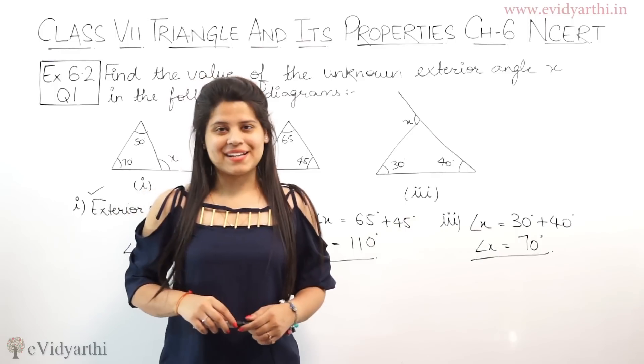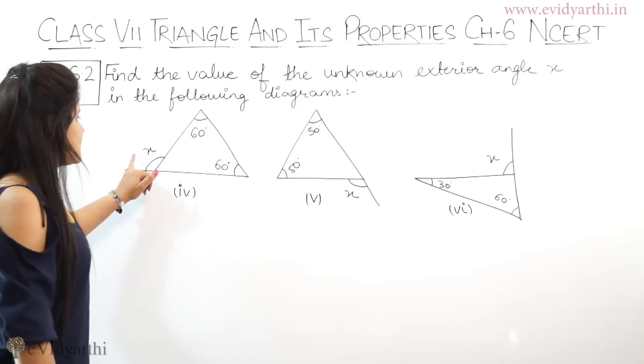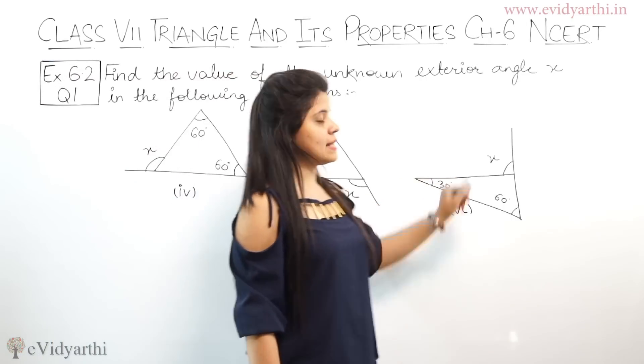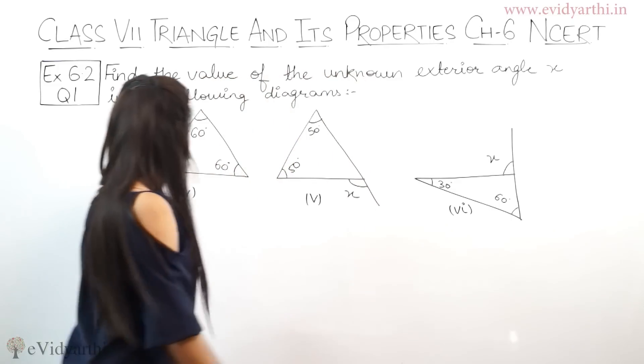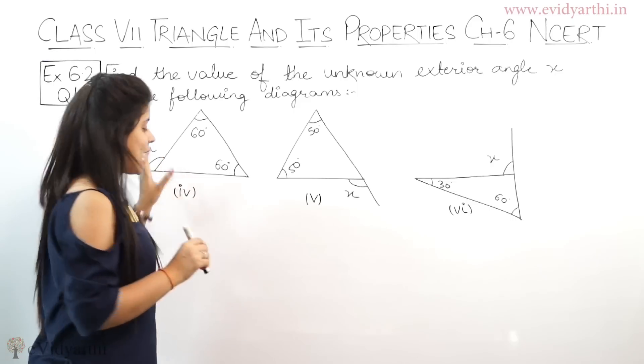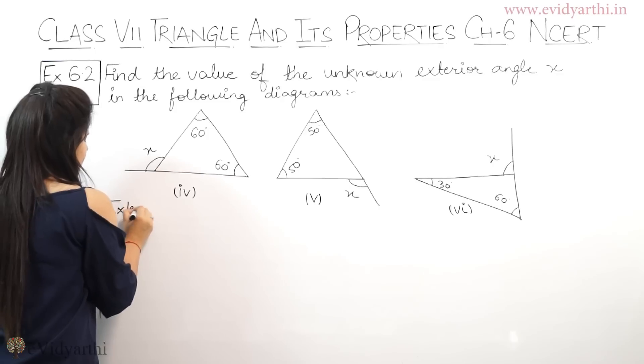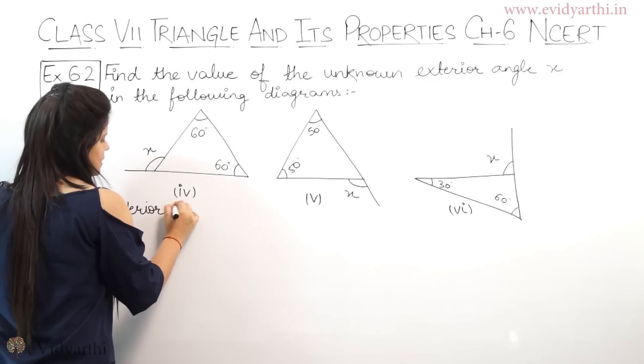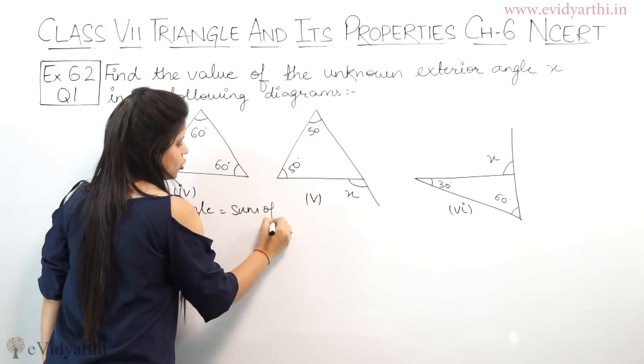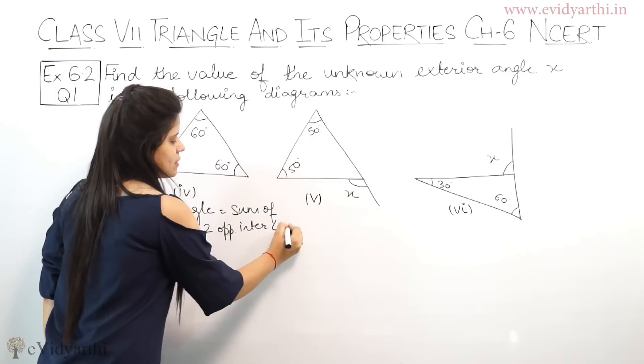In fourth part, you have X. Similarly, 5th and 6th, you will find X. Again, the angle X is the exterior angle. I will write the property once again. Exterior angle equal to sum of two opposite interior angles.